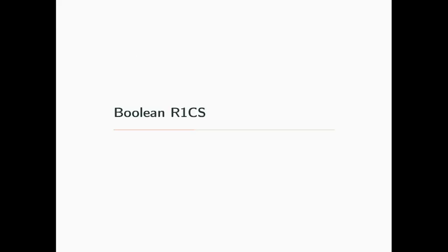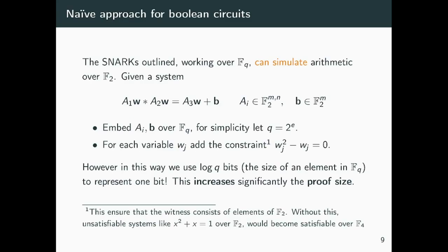So how do we deal with Boolean systems? There is a naive approach to solve Boolean systems, even if we only have a SNARK that can only work over a large field. The basic idea is we can embed the Boolean field, which consists of 0 and 1, into the larger field by mapping 0 to 0 and 1 to 1.